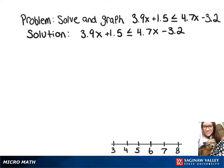In this video, we're going to solve and graph 3.9x plus 1.5 is less than or equal to 4.7x minus 3.2.